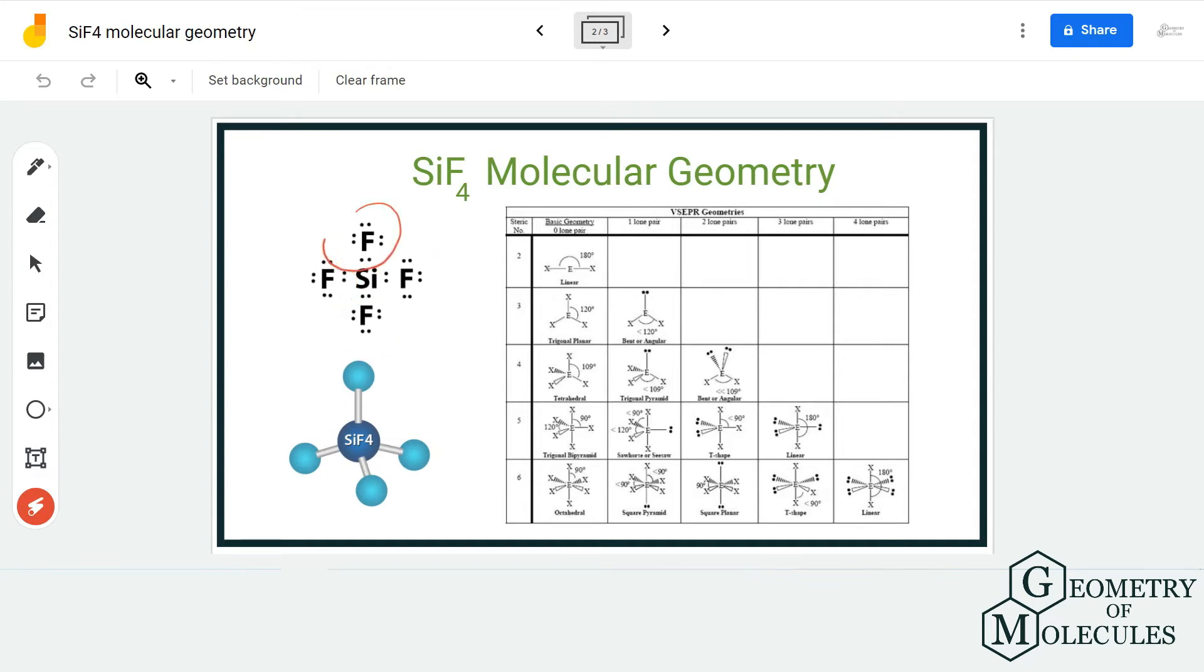a silicon atom, they will try to be as far away from each other as possible to avoid any repulsive forces between bonding pairs of electrons. According to VSEPR theory, all these atoms will be arranged at a distance